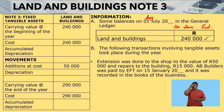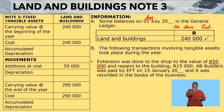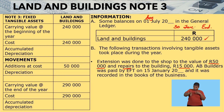We have land and buildings. The following transactions involving tangible assets took place during the year. Extensions were done to the shop to the value of $50,000 — we added a new part of the building. We also did repairs to the value of $15,000, paid to AB Builders by EFT on 15 January and recorded in the books. We need to understand which of these amounts will be recorded in our fixed tangible asset note.